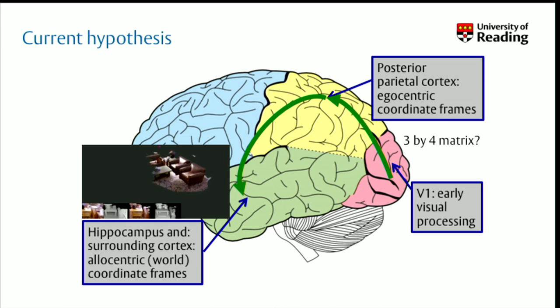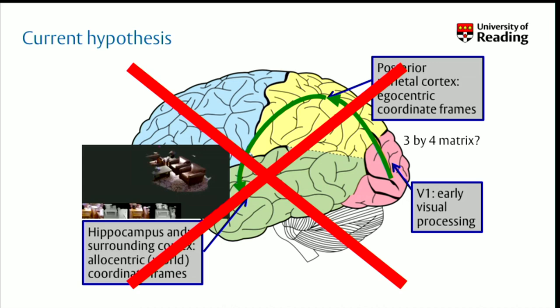Nor do we have something that goes from images to a 3D world-based frame directly, which is what SLAM does — without going through any egocentric coordinate frame. So really, we have no idea what is going on. We have no idea what the answer could possibly be to the question I asked: how do we use stereo information here, or motion parallax information here, to build up something that is useful over here?